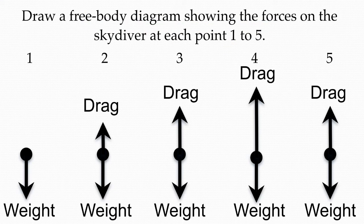You should initially have only the weight of the skydiver, and then the weight of the skydiver remaining the same throughout obviously, but the drag slowly increasing through 2 and 3. At 4, the drag increases significantly because the parachute is opening, and then at 5, the skydiver has reached terminal velocity again, but at a slower speed.